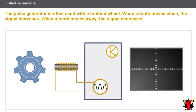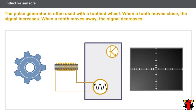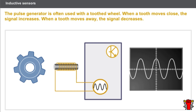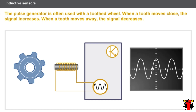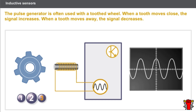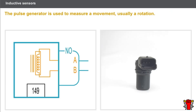The pulse generator is often used with a toothed wheel. When a tooth moves close, the signal increases; when a tooth moves away, the signal decreases. The frequency and voltage increase when the speed of rotation increases. The pulse generator is used to measure a movement, usually a rotation.